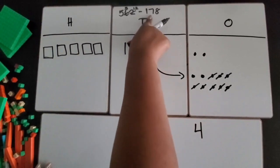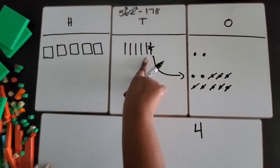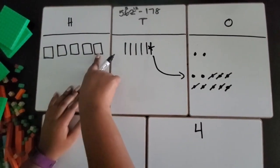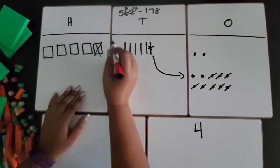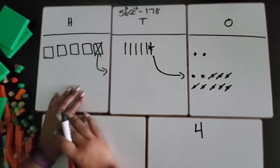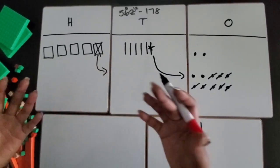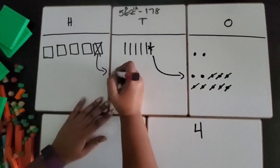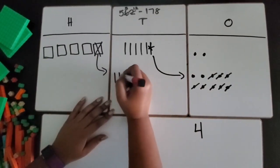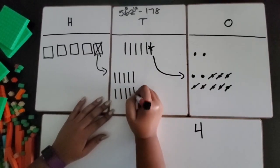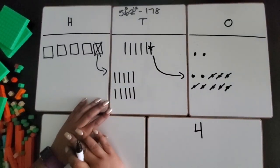Now I need to subtract 7 tens. I only have 5 though, so I'm going to come over to the 100s place. Use one of the 100s and trade it in for 10 tens because 10 tens and 100 flat both equal 100. So I'm going to draw 10 tens, 10 ten rods to represent that.